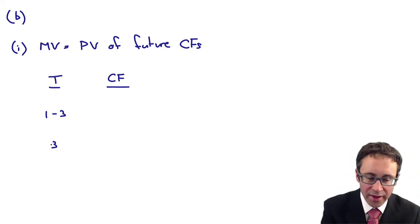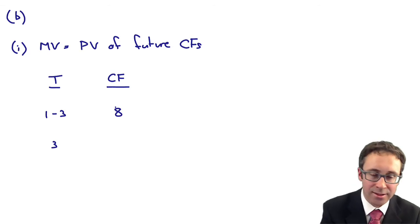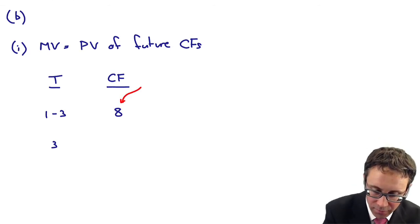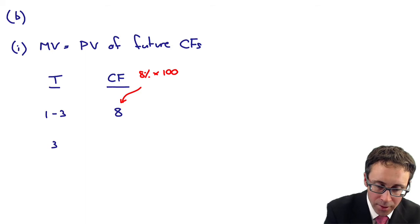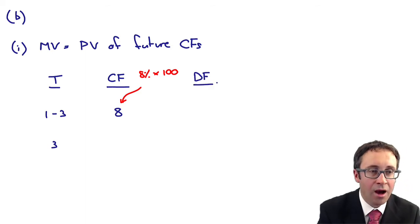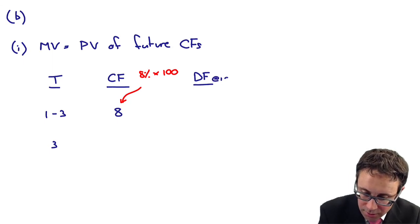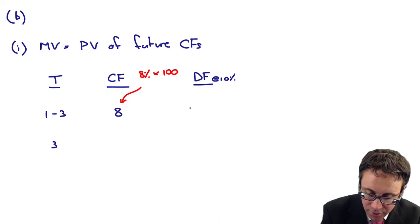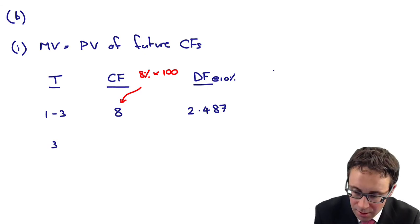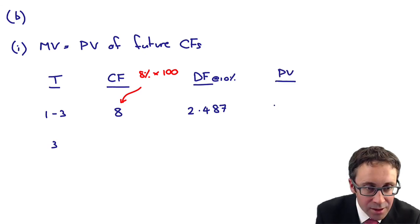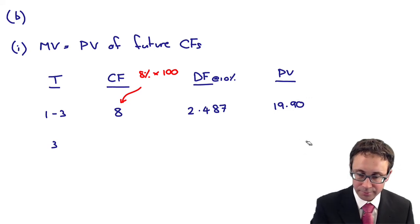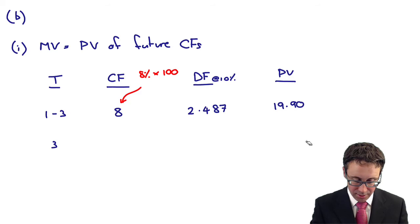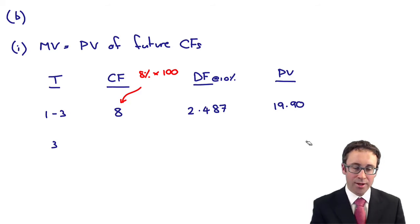We need to look at the cash flow. The cash flow from time period T1 to 3, we're trying to work out the market value, and then you've got the redemption value in three years. What you've got, the cash flow from one to three is the interest at 8. If you're curious as to where that's come from, it's 8% coupon of the par value.